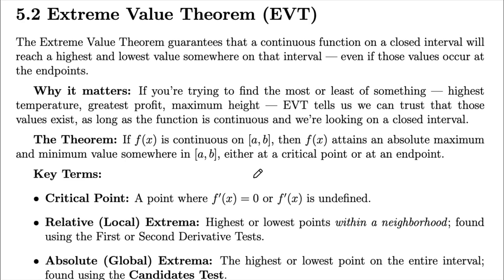Next up is the EVT or Extreme Value Theorem. This basically helps us find the most or least of something — so like the maximum or minimum value. The EVT guarantees that these values exist as long as the function is continuous. The condition is that the function must be continuous on the closed interval [A, B], and the EVT guarantees the function will have both a highest and lowest value somewhere in that interval. To check the conditions, keep an eye out for jumps, holes, or vertical asymptotes, and be especially careful with piecewise functions.